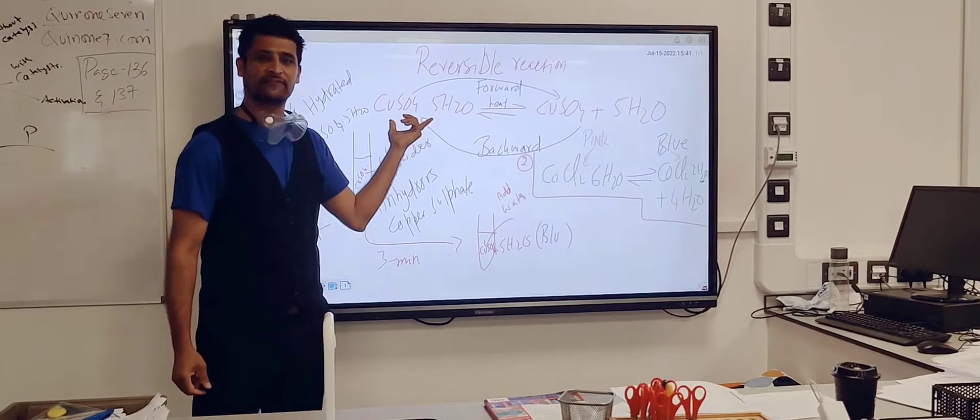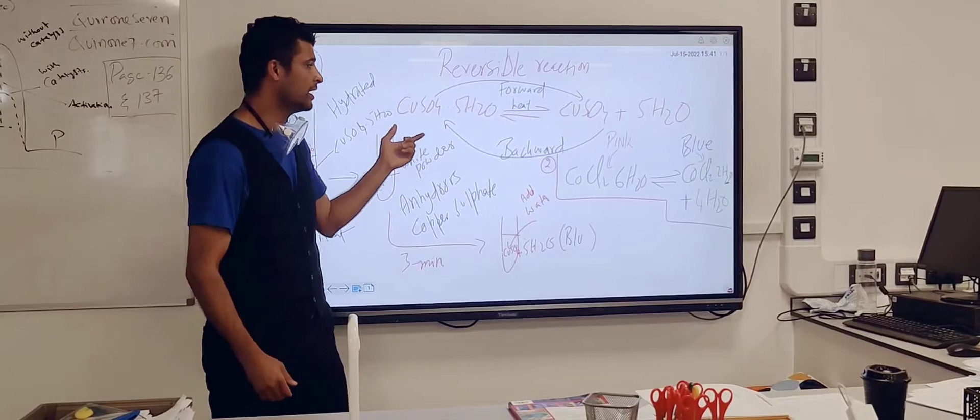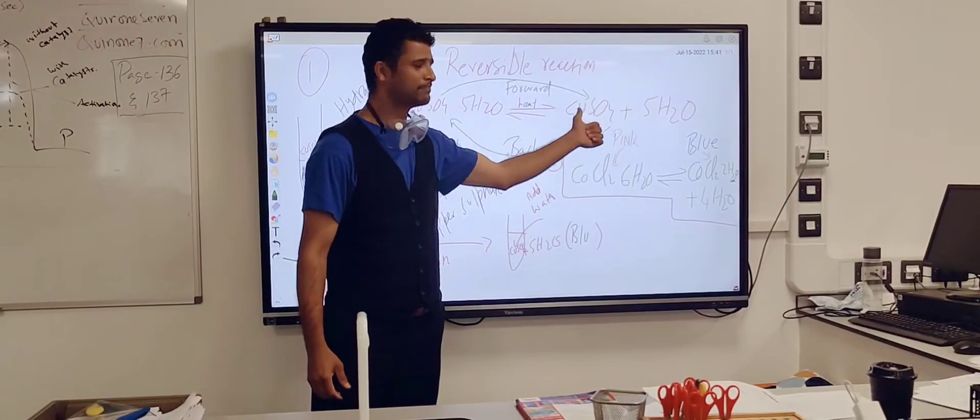When they are in the hydrated form, especially copper sulfate in the hydrated form is a blue colored powder, which I'm going to show you in a minute. When you heat it up, it will turn into a white powder.